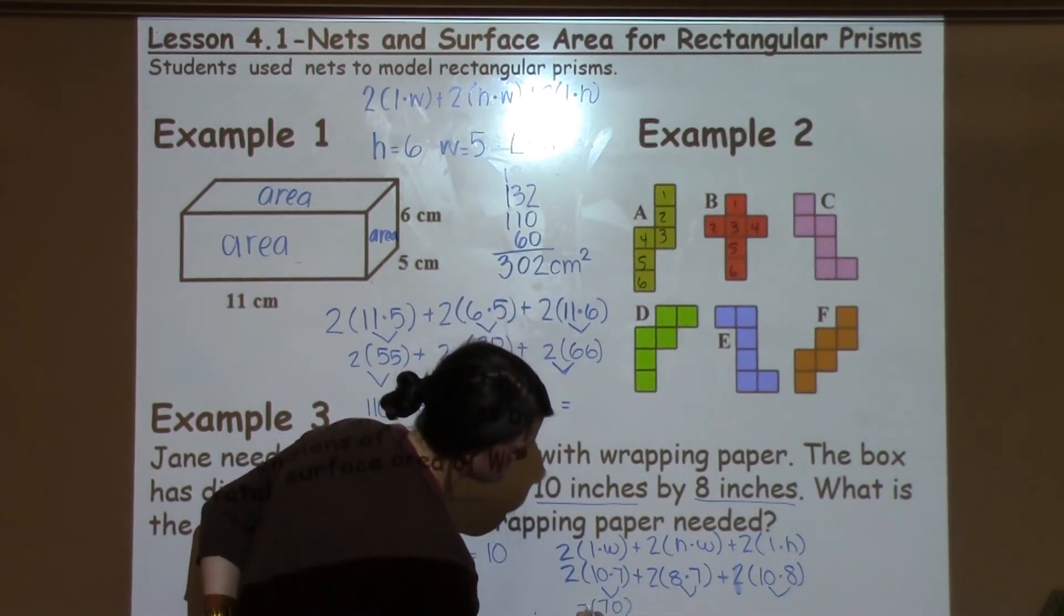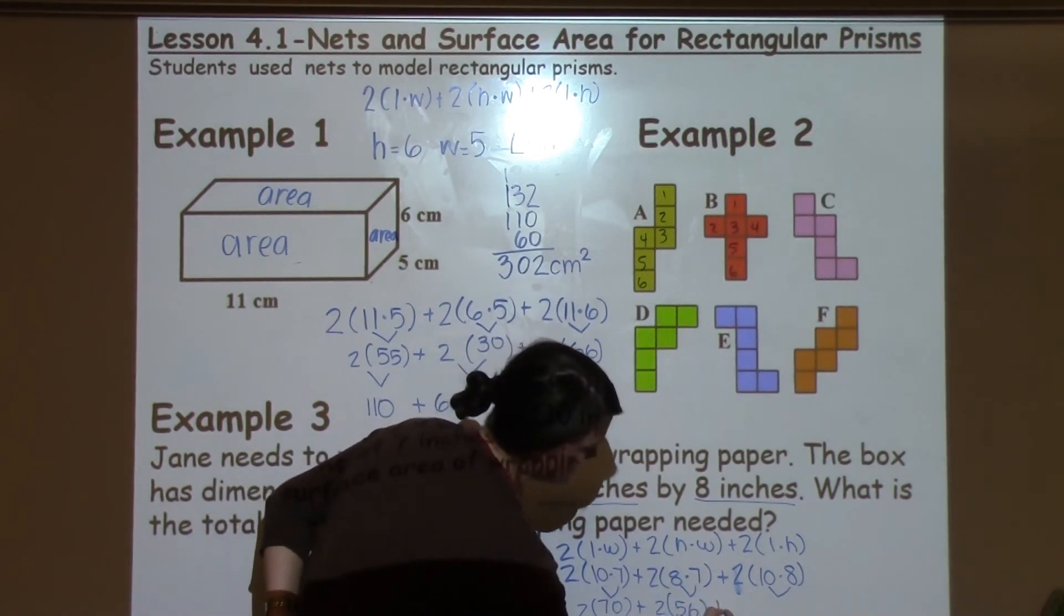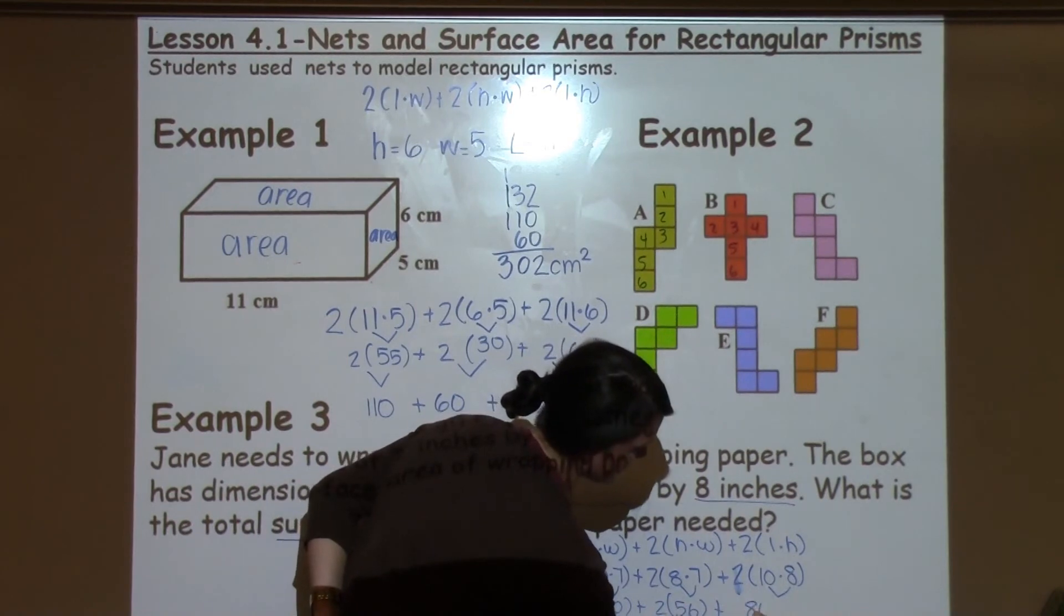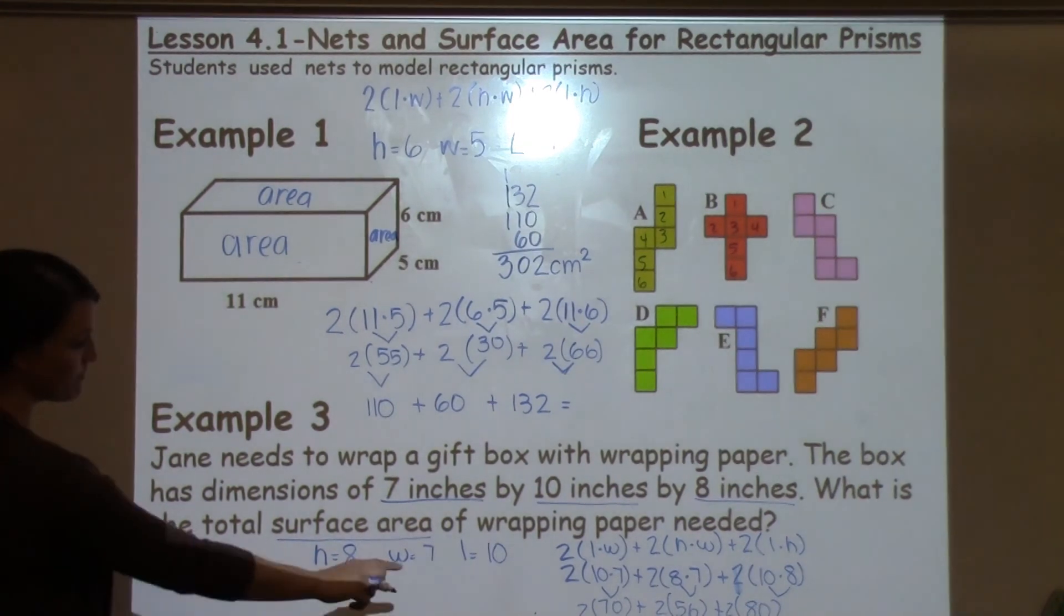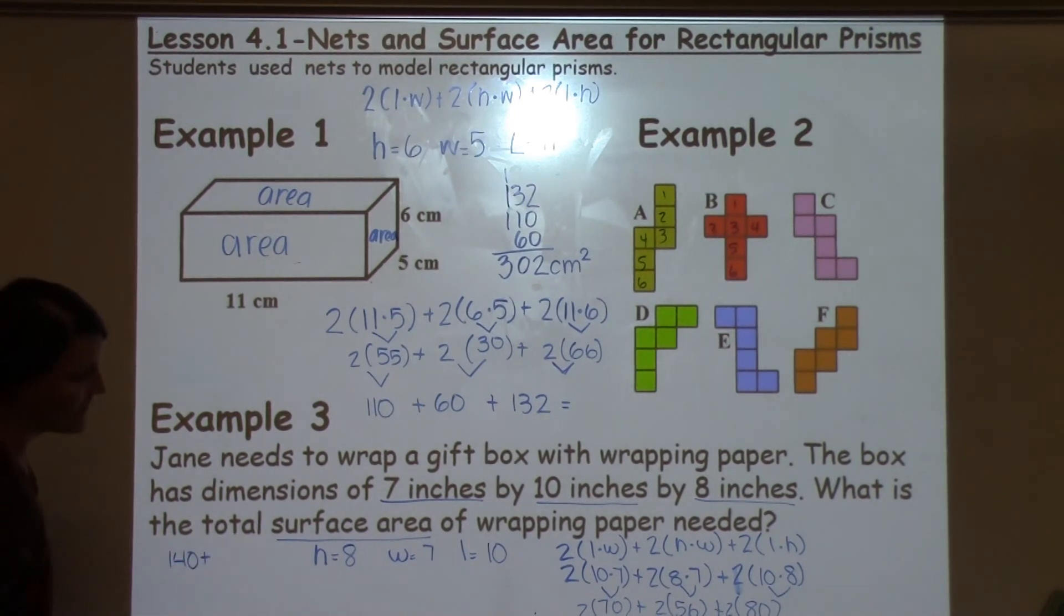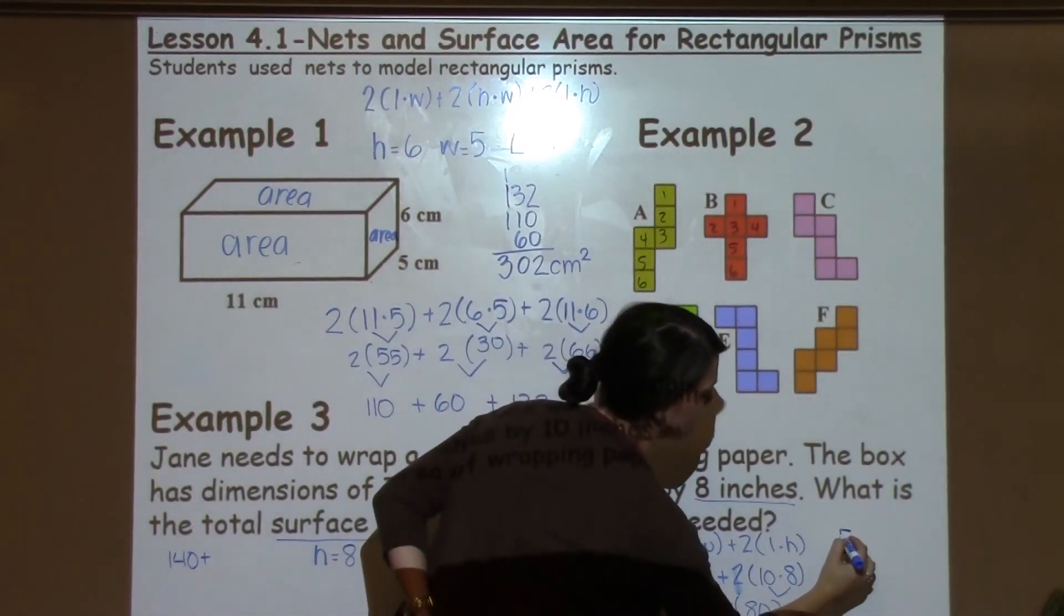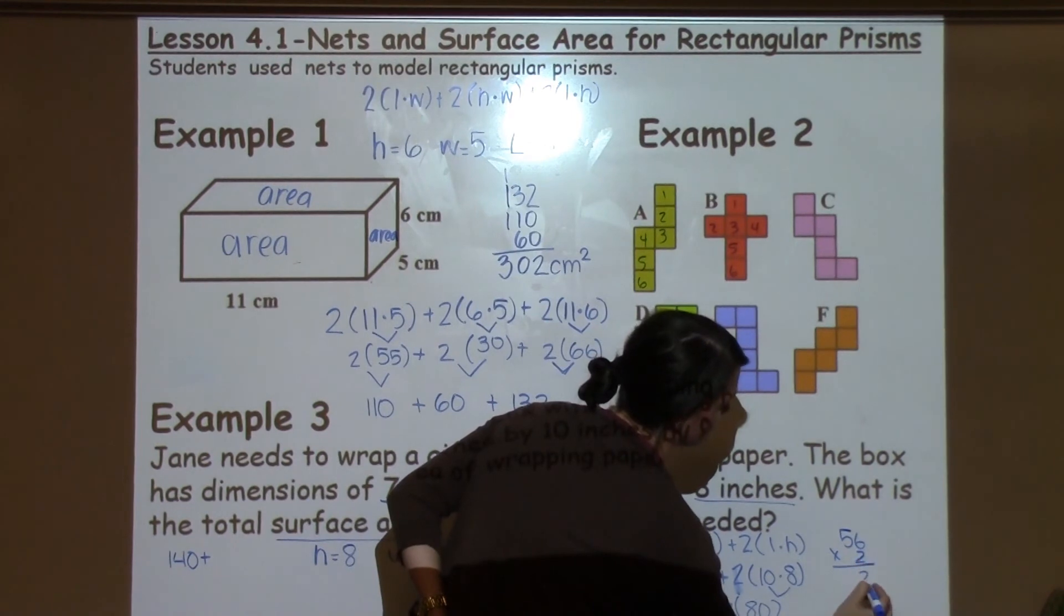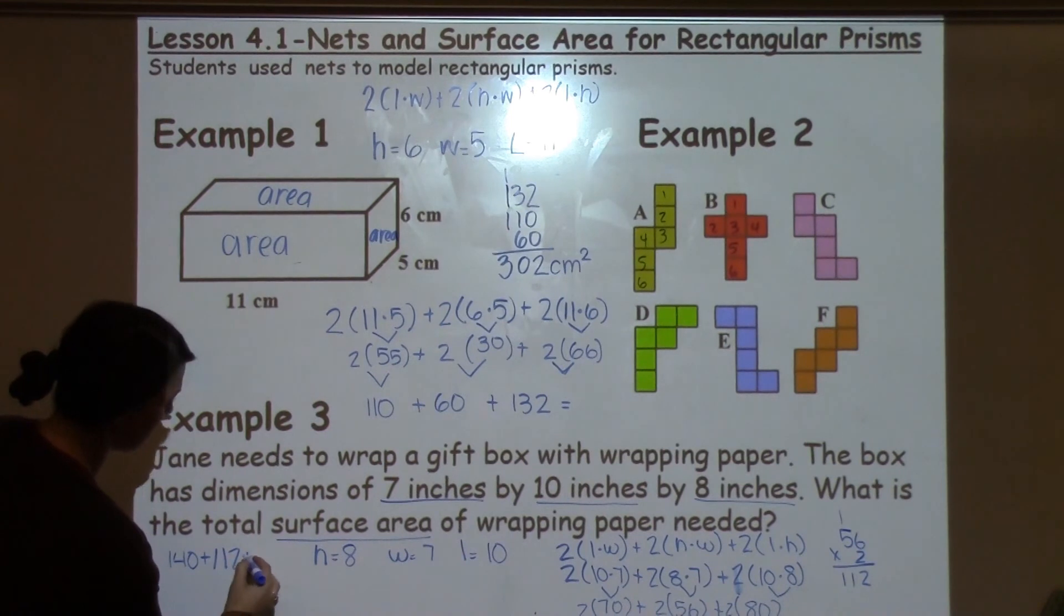And now all I have to do is double those problems. I'm going to go ahead and pull these doubled numbers over here. So I know that 70 doubled or 70 times 2 is 140. 56 times 2, if your student doesn't know that off the top of their head, they could pull it to the side and multiply. 112. And then we have 80 times 2, which is 160.